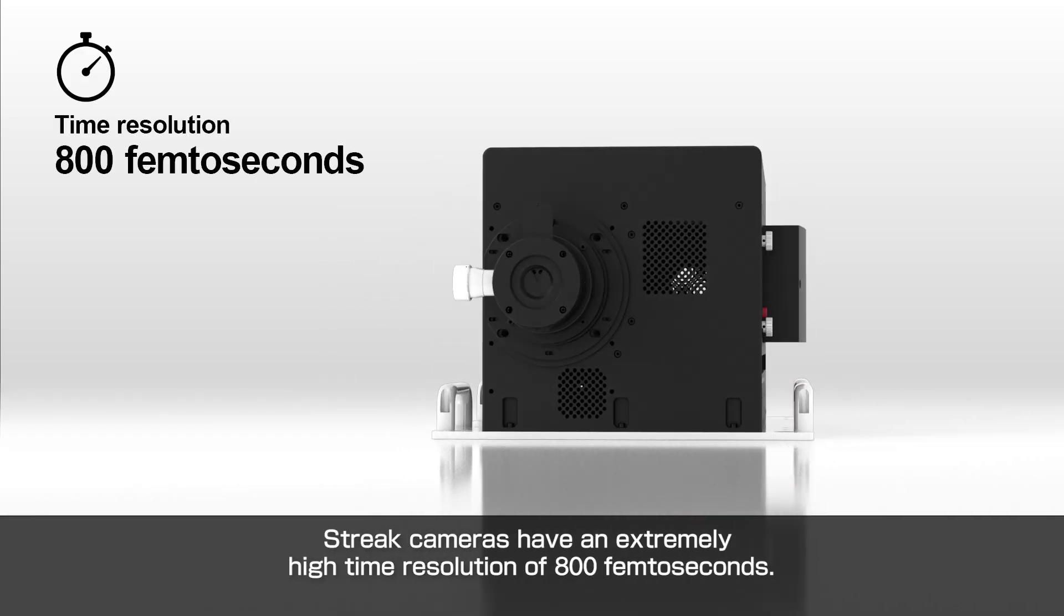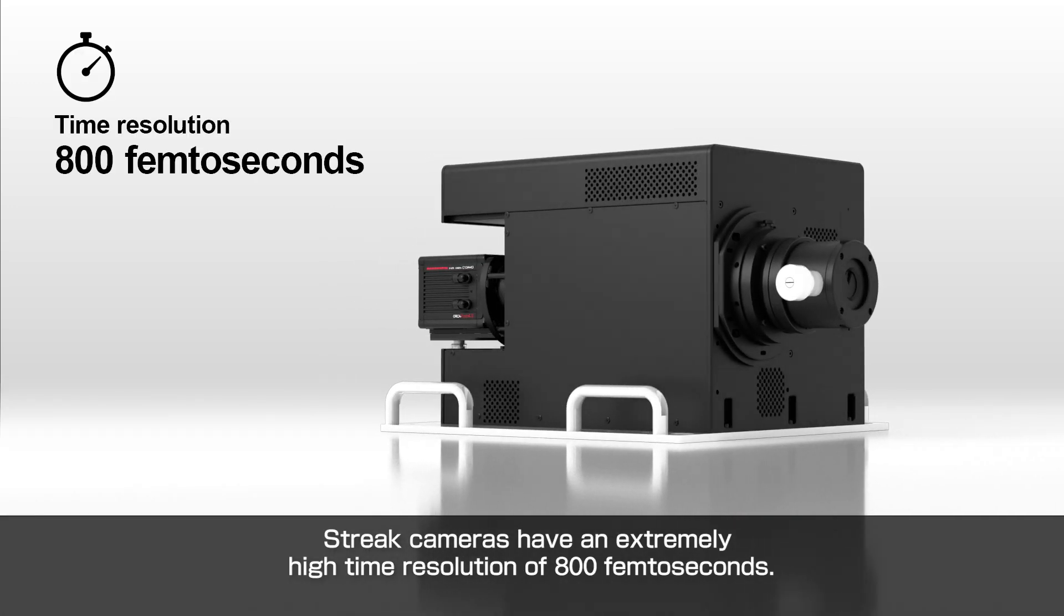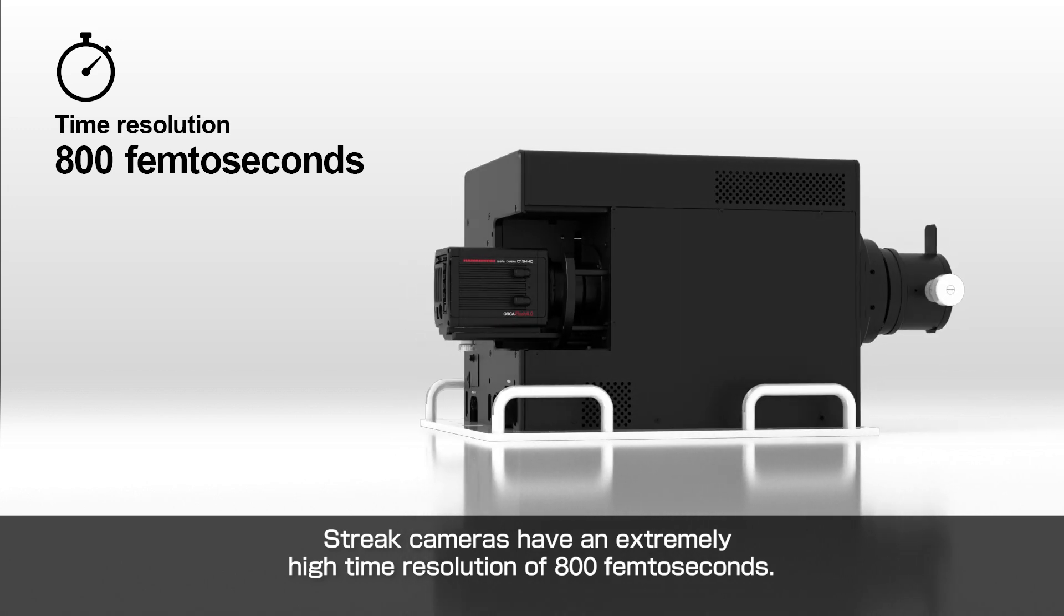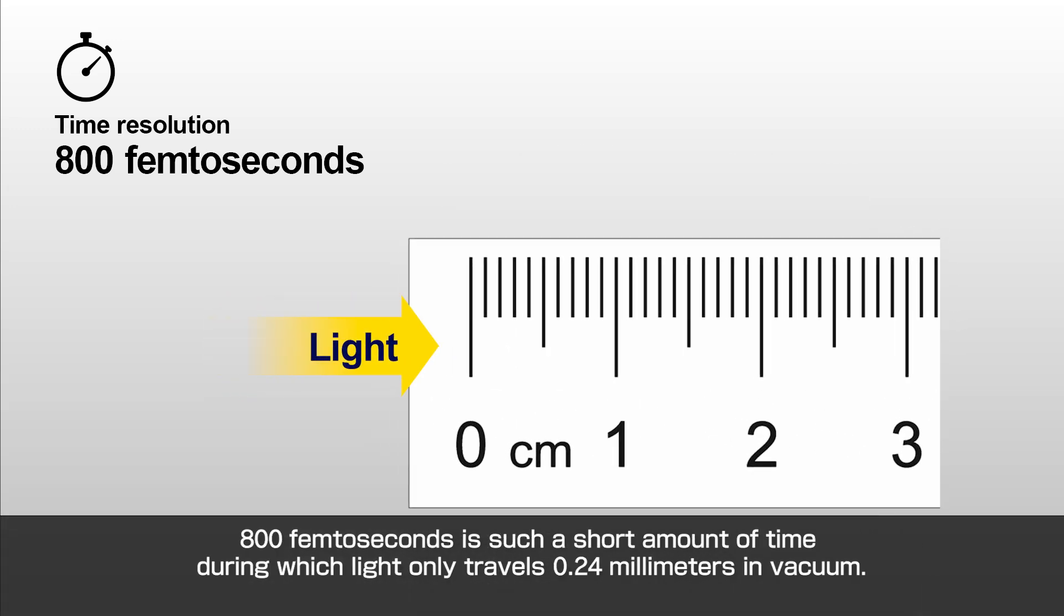Streak cameras have an extremely high time resolution of 800 femtoseconds. 800 femtoseconds is such a short amount of time, during which light only travels 0.24 mm in vacuum.